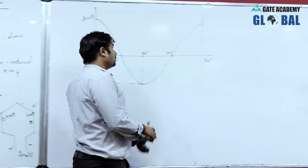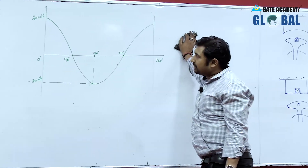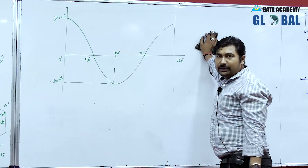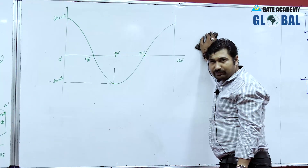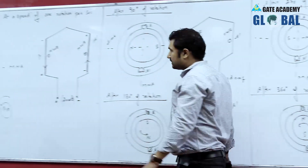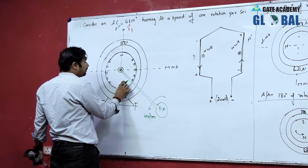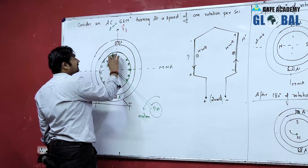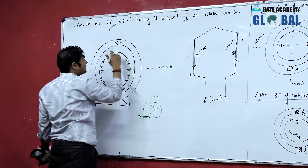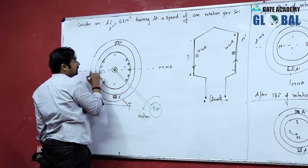We have taken a two-pole machine. In one rotation, one complete cycle of induced EMF is observed. If the machine is of four poles — north, south, north, south — then the rotor windings are placed such that there are four poles. Between adjacent north and south poles there will be a magnetic neutral axis, and there will be two magnetic neutral axes.